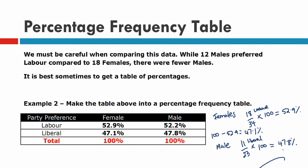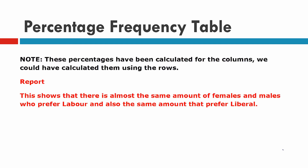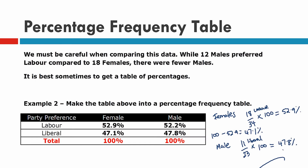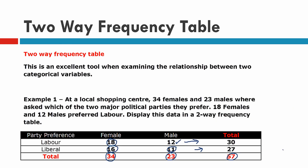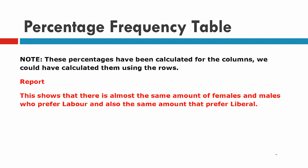If we look at it now, we can actually see that this is different. Remember there were 18 females who preferred Labour and 16 who preferred Liberal, and 12 males who preferred Labour and 11 who preferred Liberal — and we said females were in front for both. But when we look at the percentage, it was actually males that were on top for Liberal at 47.8%. So be careful with that. The report says this shows there is almost the same amount of females and males who prefer Labour and also the same amount that prefer Liberal. But if we were to say who was the most, we would still say males prefer Liberal and females prefer Labour.